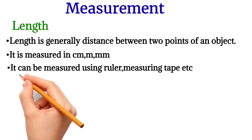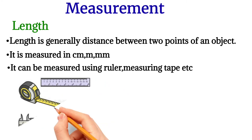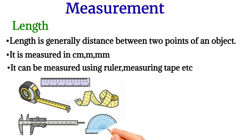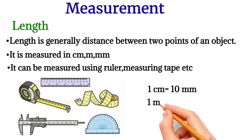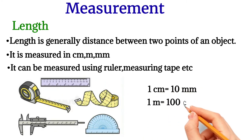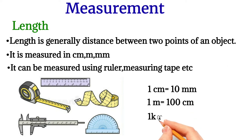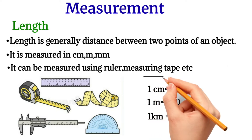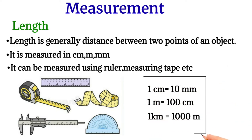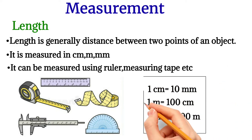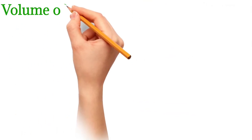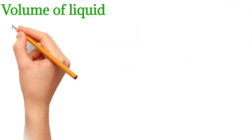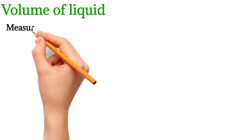You can see the tools that help to measure length. One centimeter is equal to 10 millimeters. One meter is equal to 100 centimeters. One kilometer is equal to 1000 meters.